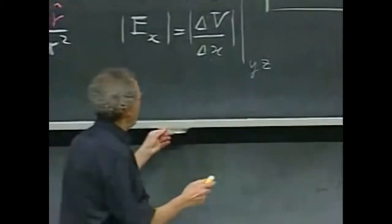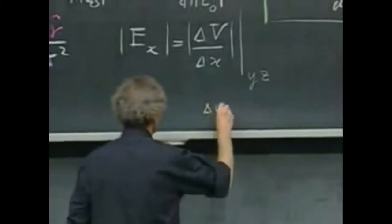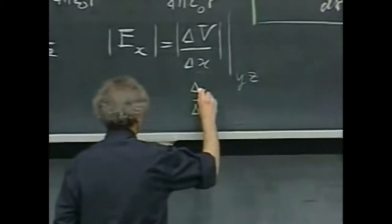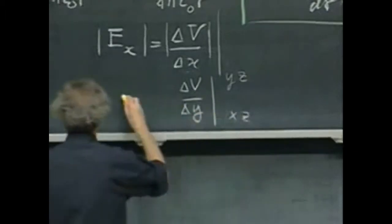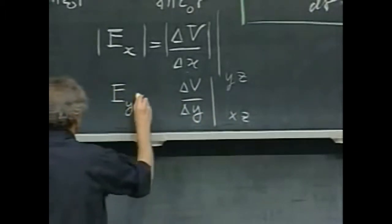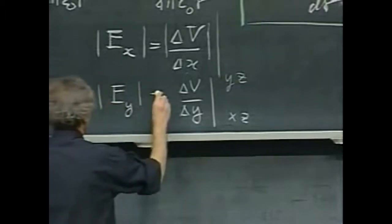Equally, if I made a small sidestep in the y direction and I measured a potential difference, keeping x and z constant, that would then be the component of the electric field in the y direction.